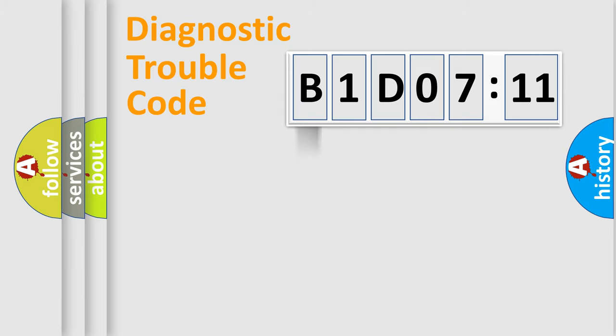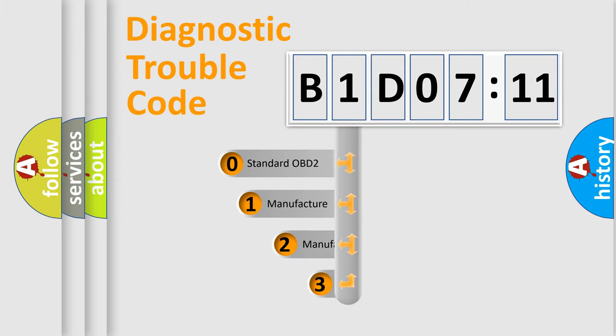Powertrain, Body, Chassis, Network. This distribution is defined in the first character code.